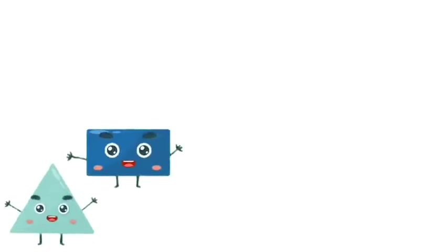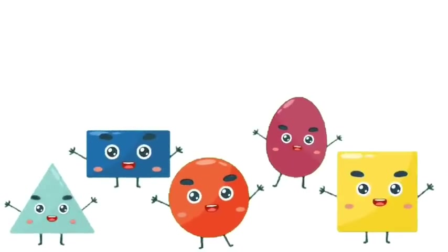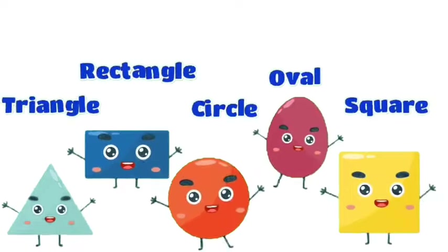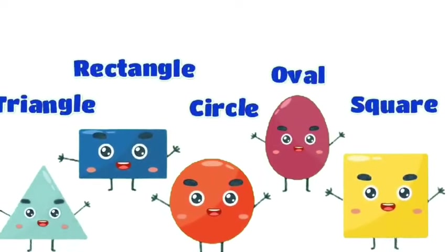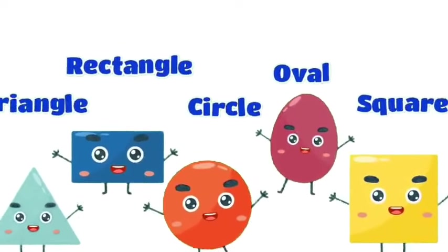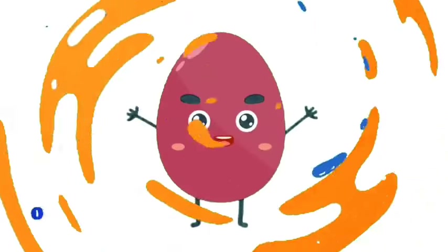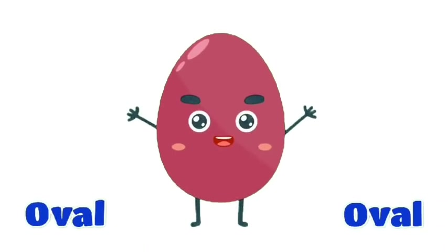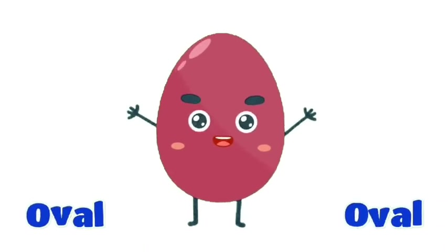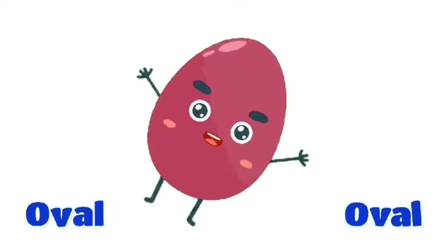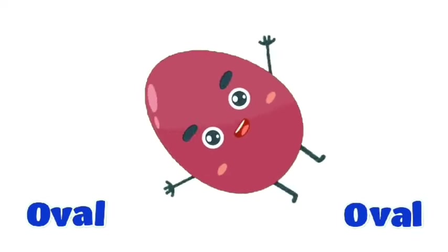Triangle, rectangle, circle, oval, square. I'm an oval round and long, round and long. I'm an oval round and long, round and long. I'm an oval round and long, like a circle that's very long indeed.